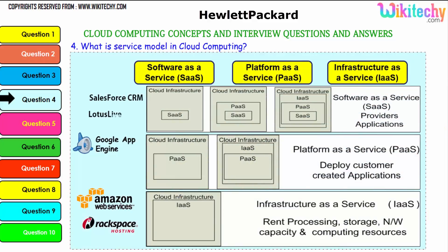For Software as a Service, the software is placed in the operating system which is placed in the infrastructure. For Platform as a Service, the OS is given and placed in a server — you can put any application or software you want. For Infrastructure as a Service, a server is given and you can choose any OS or application. Only application-level changes are possible with SaaS. Examples: SaaS includes Lotus Live and Salesforce CRM; PaaS includes Windows Azure and Google App Engine; IaaS includes Amazon Web Services and Rackspace hosting.